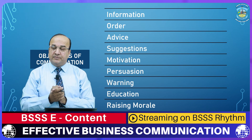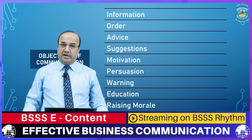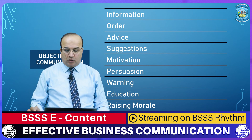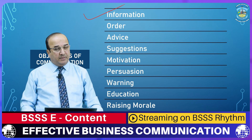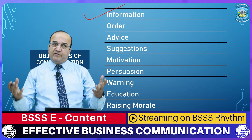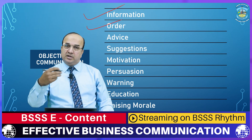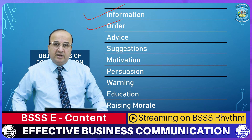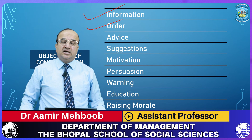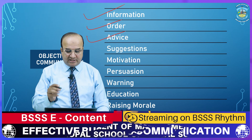When we talk about the objectives of communication, the first one is information. Communication can take the form of giving or receiving information. The second objective is order — a boss giving orders to subordinates, supervisors to managers, a CEO giving orders. For all of this, we use communication.